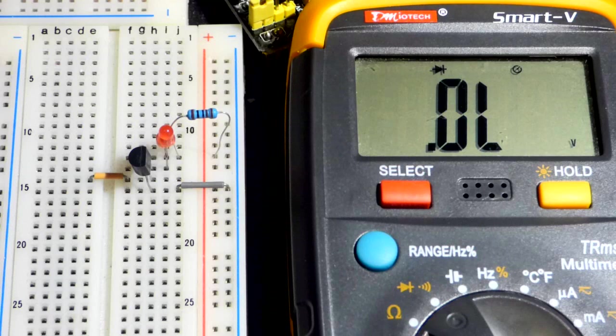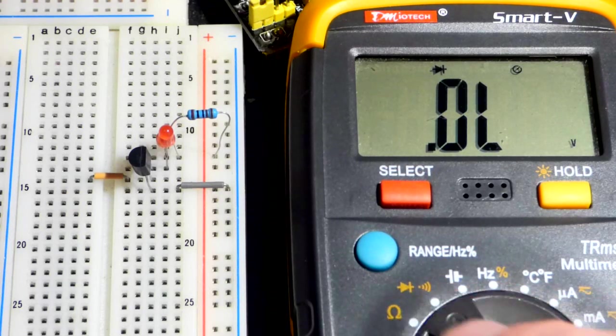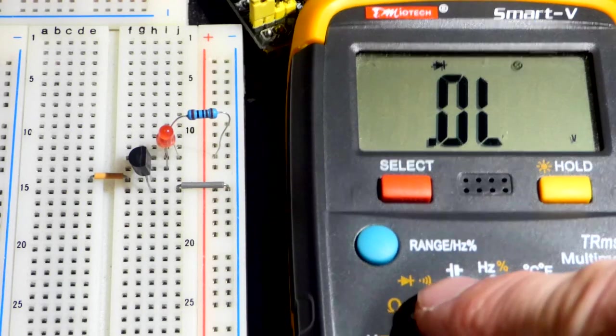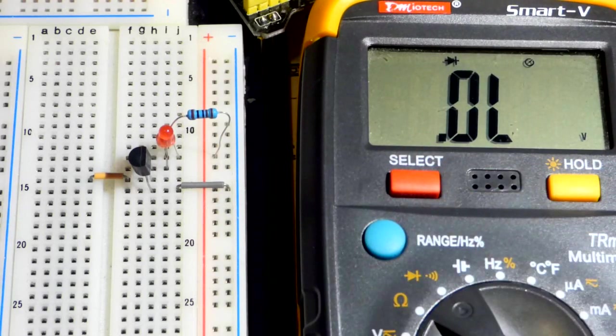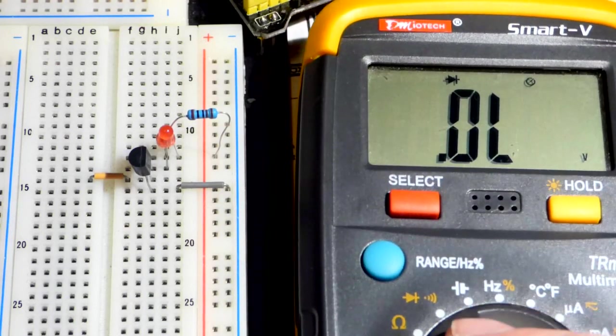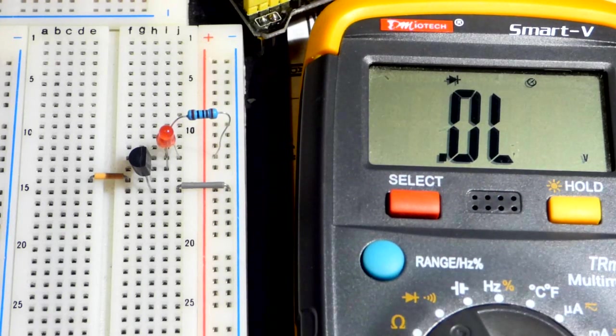So, I find this a lot where the diode tester and the continuity tester are usually at the same setting for the meter. But usually, there's like select, unless the meter automatically gives you one or the other.